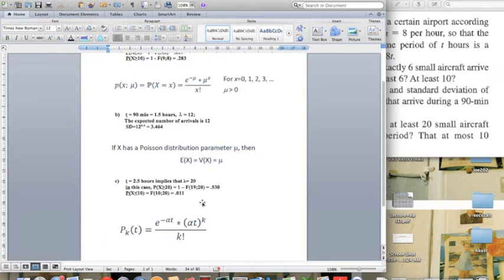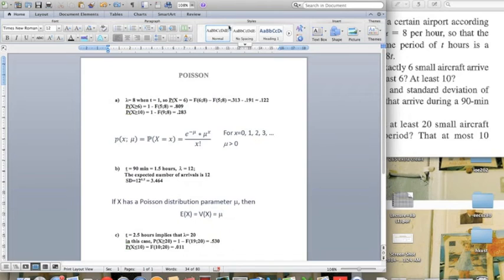And for x is greater than 10, because it has an equal sign, so we have to use f(10, 20) here, and we can get the answer 0.11. And that's it for Poisson distribution.